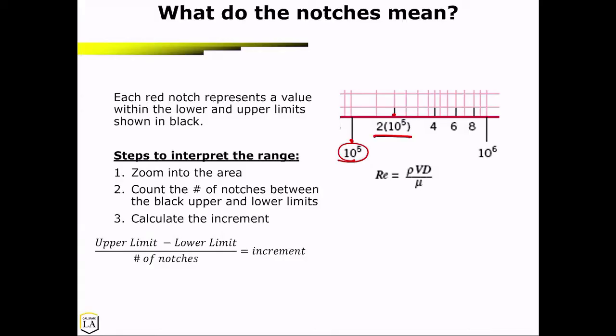Now what you want to do in order to interpret the range is zoom into the area, which I've shown here, count the number of notches between the black upper and lower limits, and then calculate the increment. So the number of notches in this example is going to be 1 and 2. So you don't start here. You start at the next notch.